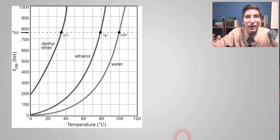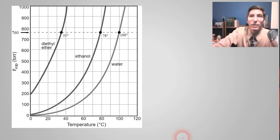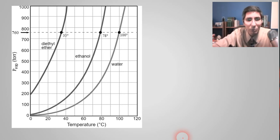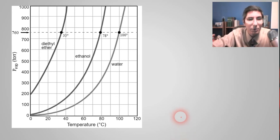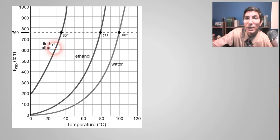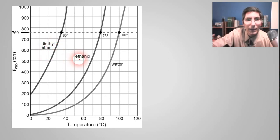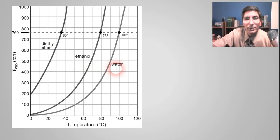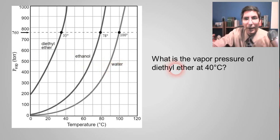We have some examples of that. Now I have a diagram called a vapor pressure diagram. On this diagram we've plotted the vapor pressures of three different liquids as a function of temperature: diethyl ether, ethanol, and water.